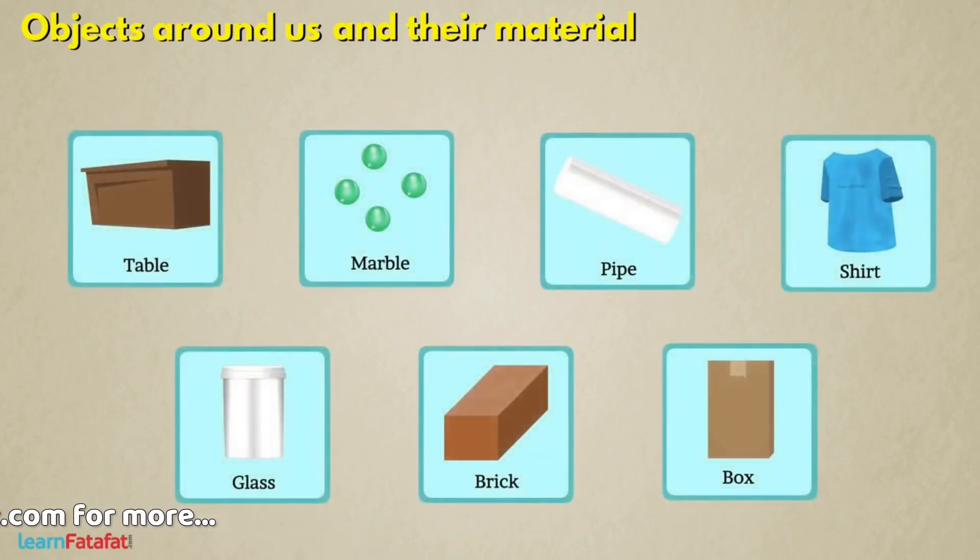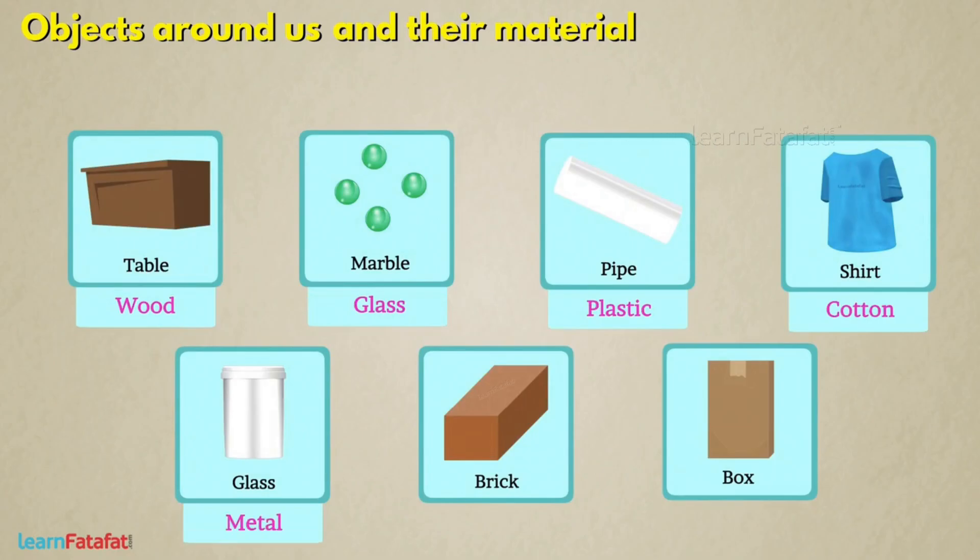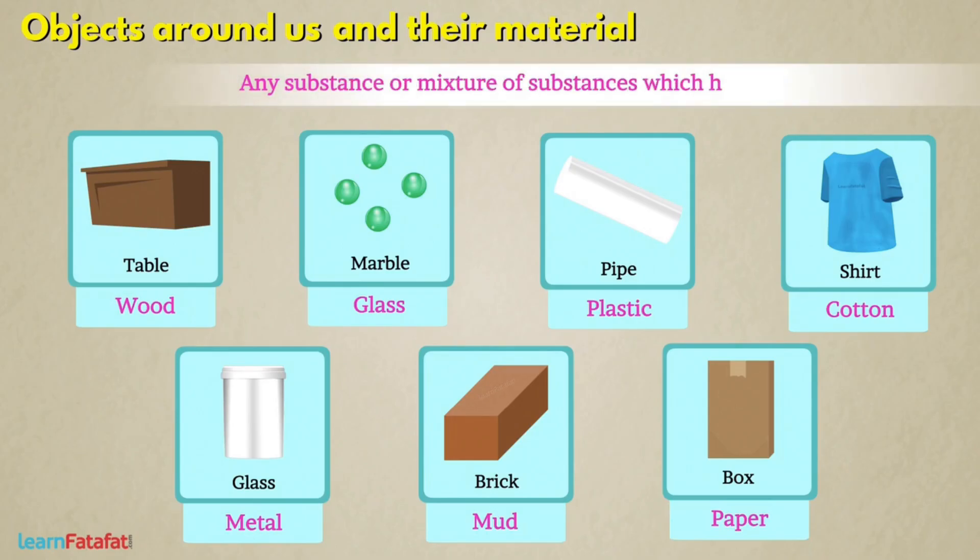A material is a thing such as wood, glass, plastic, cotton, metals, mud, paper, etc. from which objects can be formed. In general, any substance or mixture of substances which has mass and volume is called material.